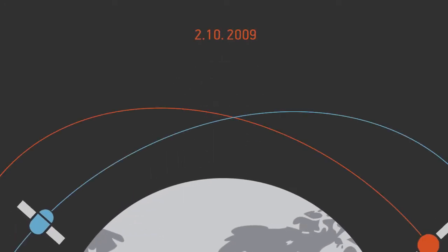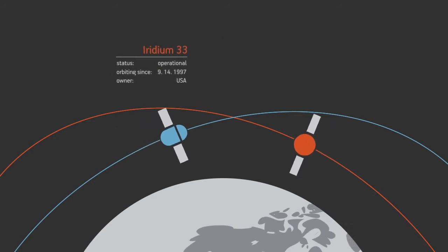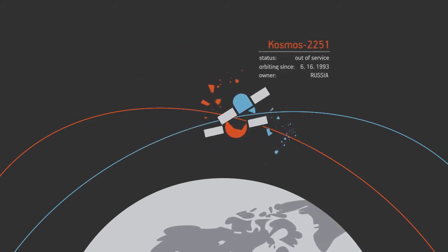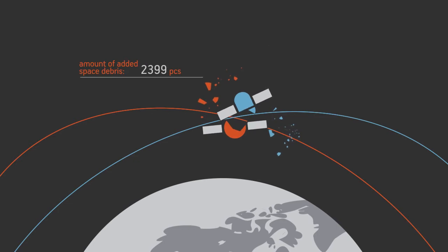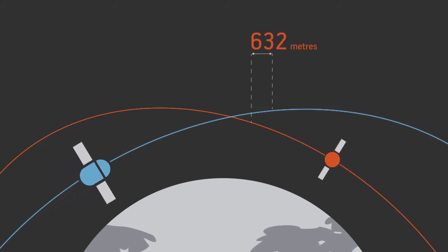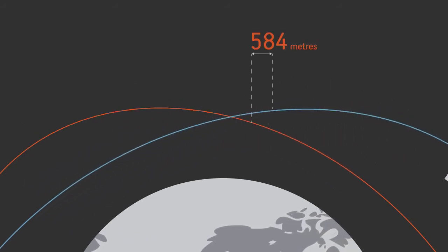In February 2009, the satellites Iridium-33 and Cosmos-2251 collided in orbit. This collision could have been avoided if the information on the satellite's trajectories had been accurate. Based on public data, the satellites were supposed to pass by each other by no less than half a kilometer.